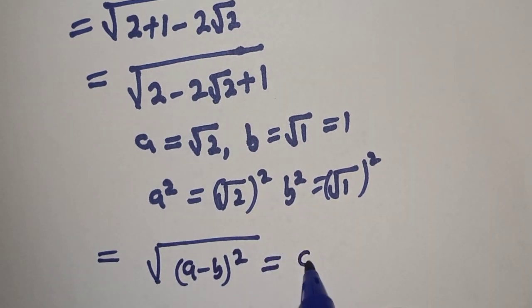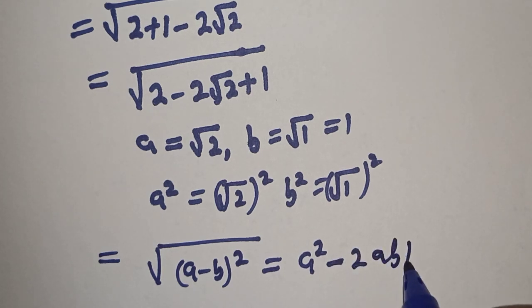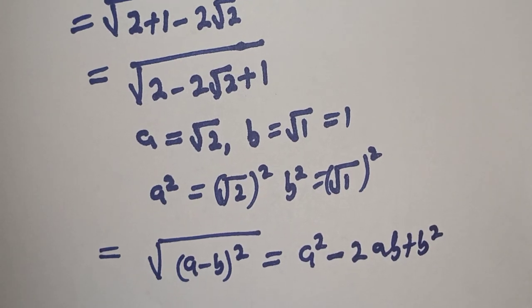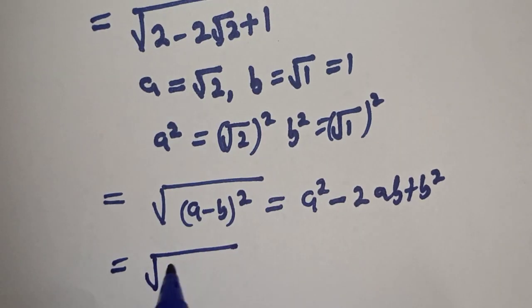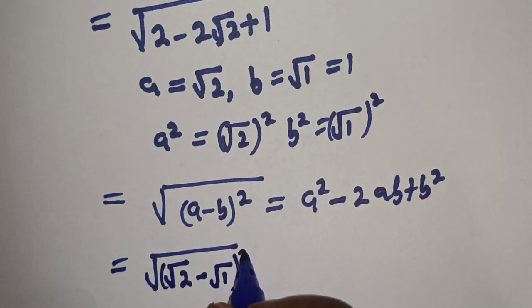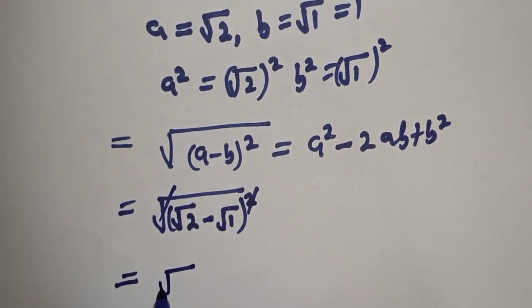a square minus 2ab plus b square. Now this is equal to, what is our a square? Root of root 2 minus b is root 1 square. This will cancel. This equal to root 2 minus root 1.